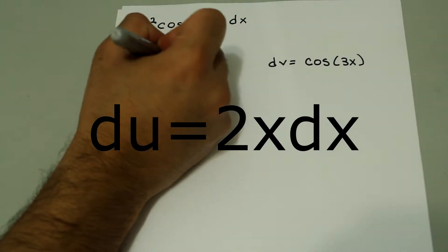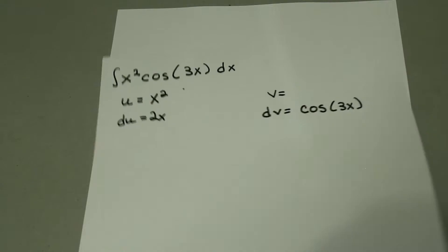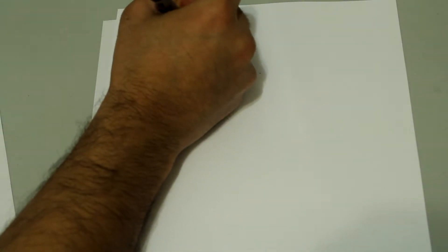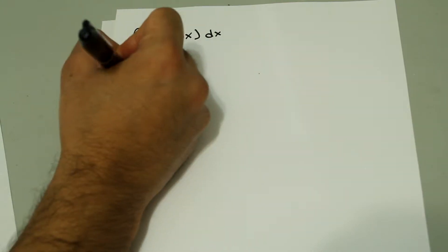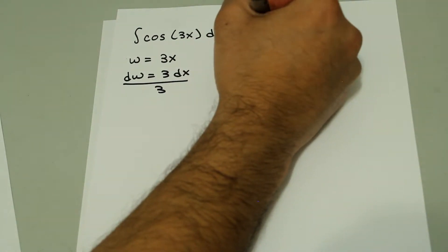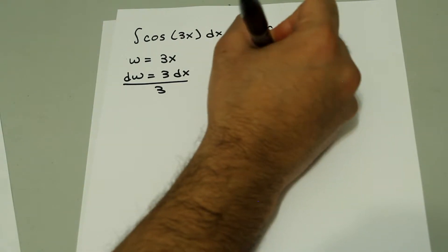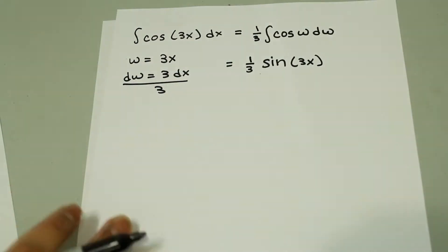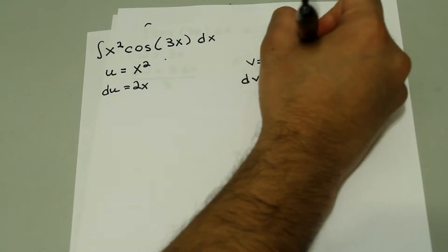du is just equal to 2x, and v is the integral of dv. I can't do that off the top of my head, so I'll work it out separately. Integral of cosine of 3x dx — I'll use w-substitution: w equals 3x, dw equals 3 dx, divide by 3. So we can rewrite this as 1/3 integral of cosine of w dw, which equals 1/3 sine of w, and w is just 3x. We don't need the plus c for now; we'll take care of it at the very end. So v equals 1/3 sine of 3x.